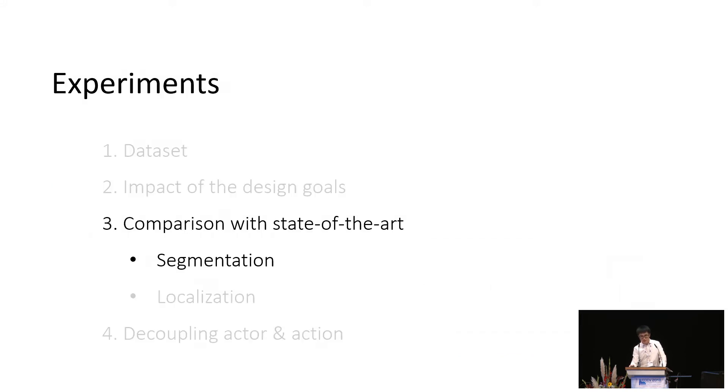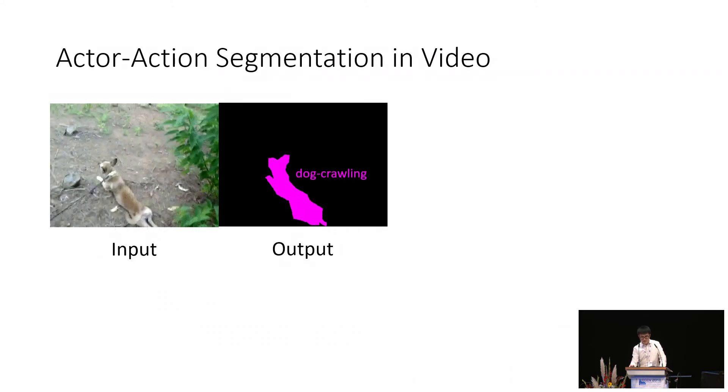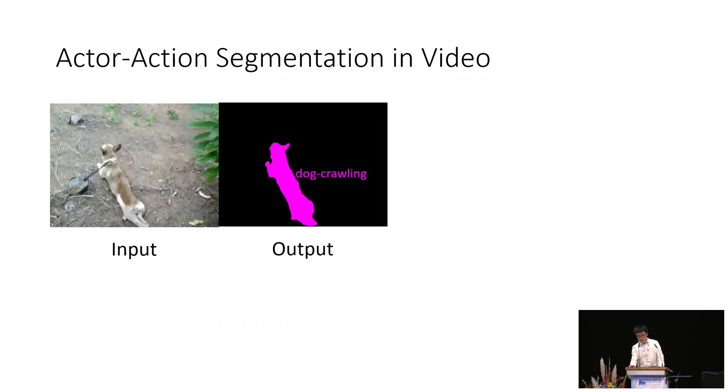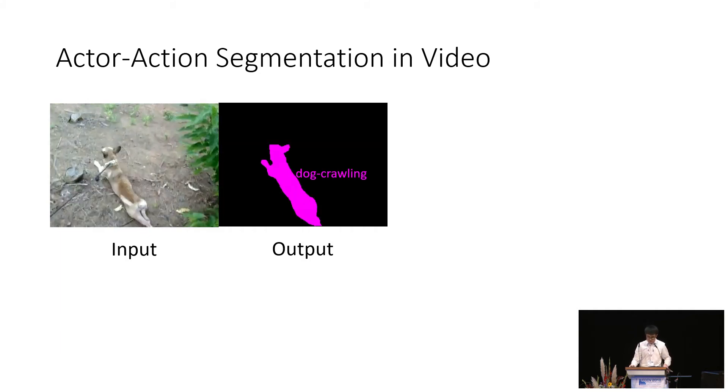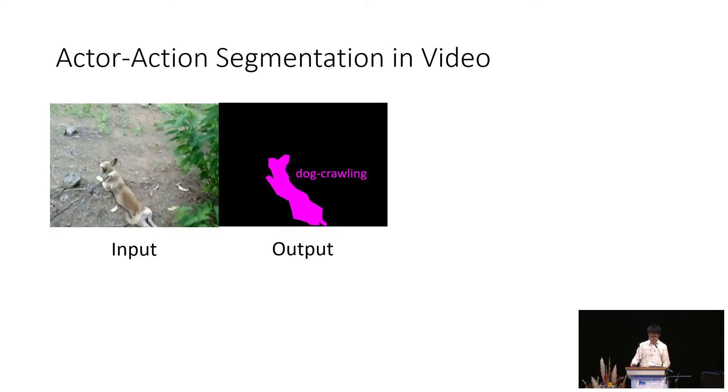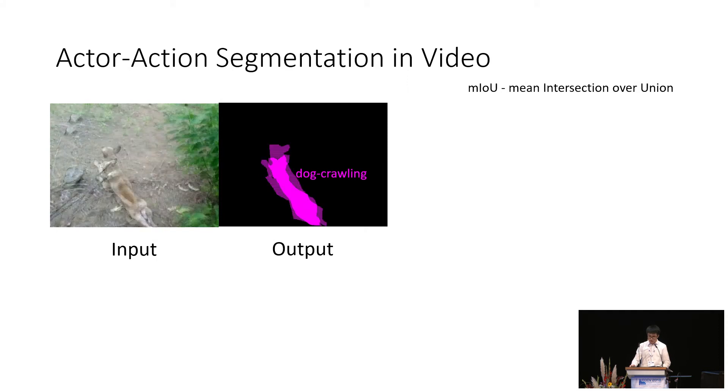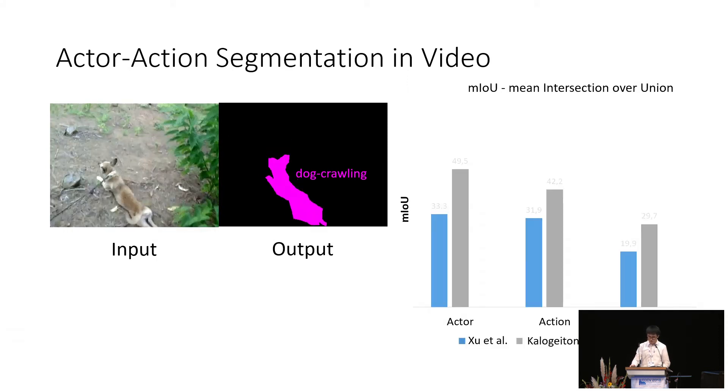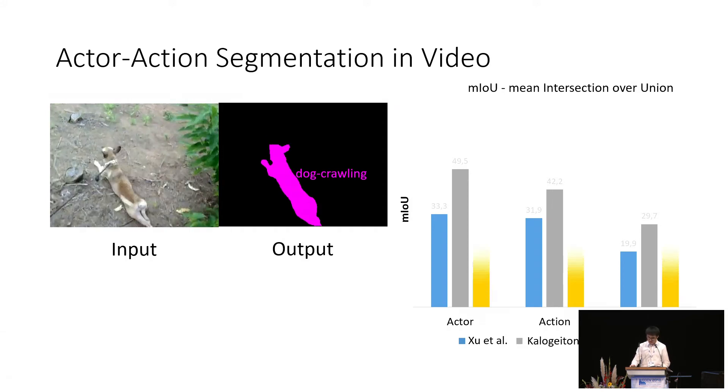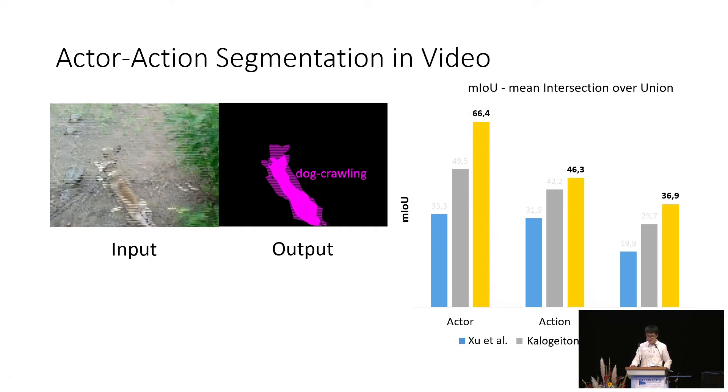Next, we'll compare our model to the state-of-the-art algorithms, first on the task of actor action semantic segmentation. In the task of actor action semantic segmentation, the algorithms output actor labels, action labels, and segmentation masks, given a short video clip. We compare our model against a representative probabilistic graphical model and a two-stage refinement method. We have reached the state-of-the-art on actor action semantic segmentation.